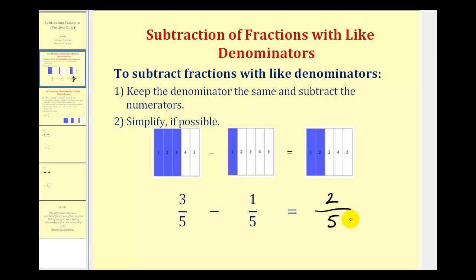Let's take a look at the model for this. Here's the model for three-fifths. Here's the model for one-fifth. Notice if we have three pieces and we take away one piece, we'd be left with two pieces, where each piece represents one-fifth. So the difference is two-fifths.